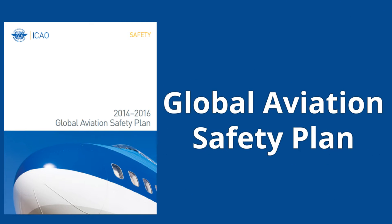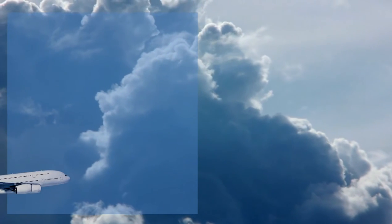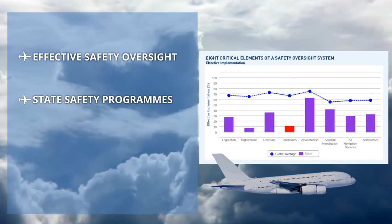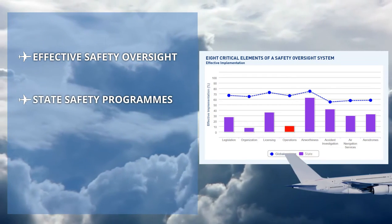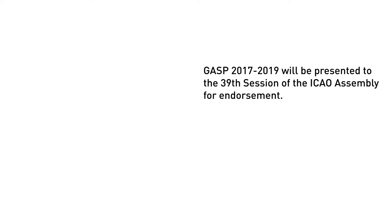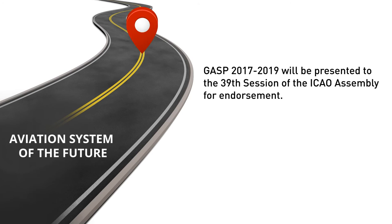The Global Aviation Safety Plan sets out a continuous improvement strategy which includes objectives for states to meet through the implementation of effective safety oversight systems, the implementation of state safety programs and the evolution to predictive risk management. The latest GASP, to be endorsed by the 39th session of the ICAO Assembly, includes a new roadmap to assist the aviation community in achieving these objectives.